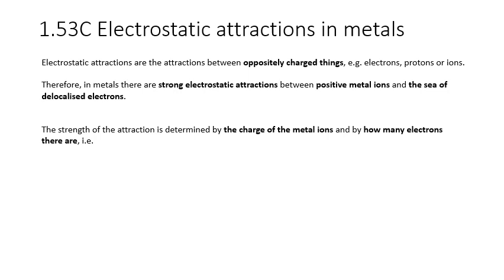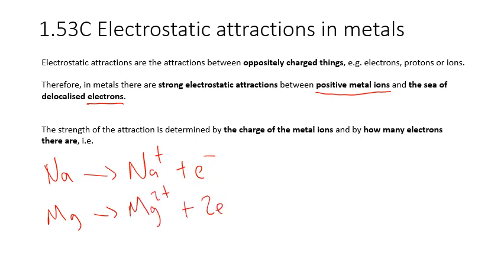So now that we know what electrostatic attractions are, how do we apply this to metals? Well, metals consist of a lattice of positive metal ions surrounded by a sea of delocalized electrons. So we have positive metal ions and negative electrons attracting each other. Now, these will determine the properties of the metal in terms of its melting and boiling point. But the strength of this attraction is determined by the charge of the metal ion, which could be 1 plus, 2 plus and so on, and by how many electrons there are.